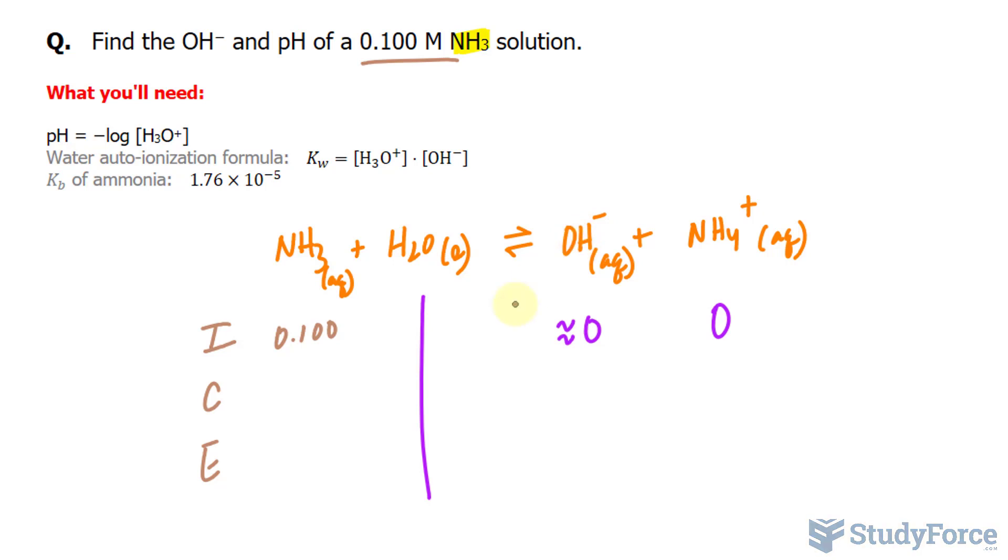What we are looking for is the concentration of OH minus, because once we find the concentration of OH minus, we can then use the water autoionization formula, substitute it into here, along with what we know about K sub W, it's 1.0 times 10 to the power of negative 14, find H3O plus, and then use this formula to find the pH.